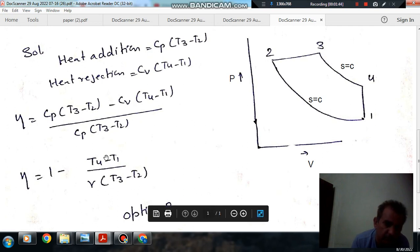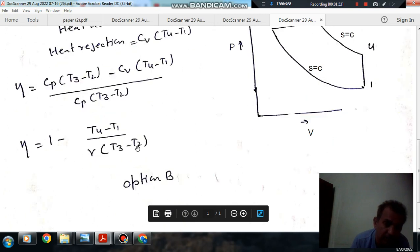So efficiency is 1 minus Cv T4 minus T1 divided by Cp T3 minus T2, and Cp by Cv is gamma. The answer is Option B.